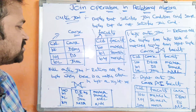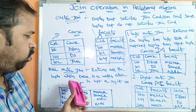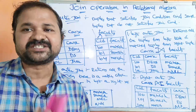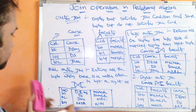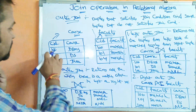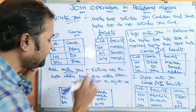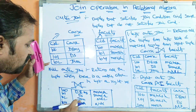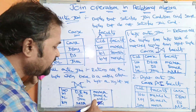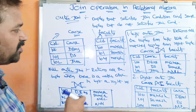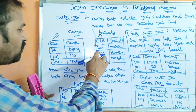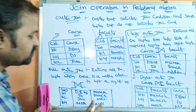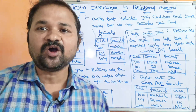Full outer join means it returns all the tuples when there is a match either in the left or right relation. It returns all tuples from both relations; if there is no match, null will be displayed. So the output has course ID, course, and faculty. 100 DBMS — faculty Mahesh. 101 data structure — faculty Ramesh. 102 Java — course ID 102 is not in the faculty table, so null is displayed for faculty. Then 104 Naresh — course ID 104 is not in the course table, so course is null.